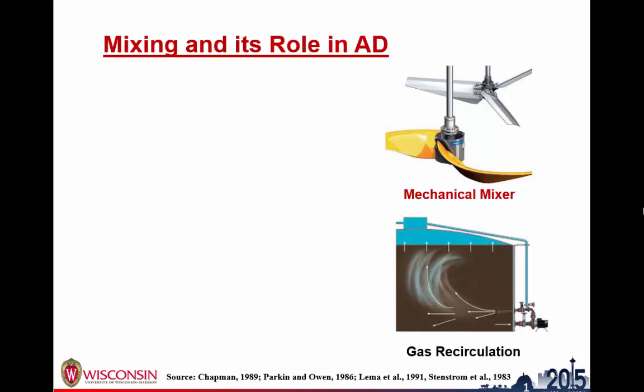I'll start with a little background. The mixing system in a digester can be achieved in many ways — for example, the recirculation of sludge or gas. It can also be achieved by a mechanical mixer, which has been reported to be more efficient in terms of power input per unit of manure mixed.